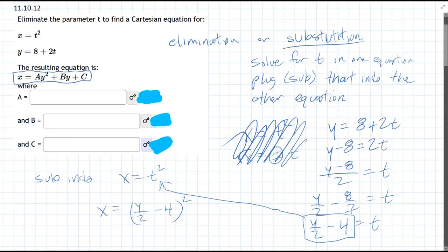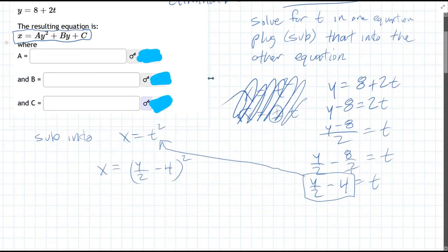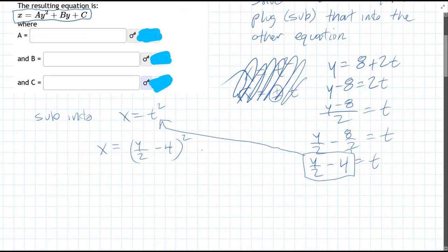So how do we get it into that form? It's gonna be a quadratic in the y variable. So we're gonna FOIL this right here. So we have y over 2 squared minus y over 2 times 4 minus y over 2 times 4 plus negative 4 squared. And this all still equals x.